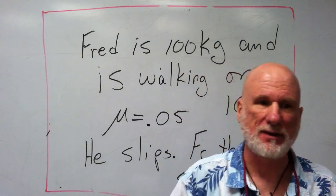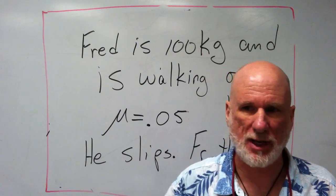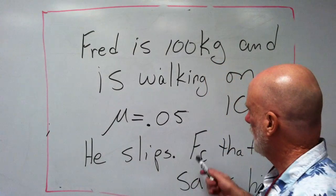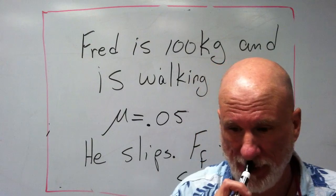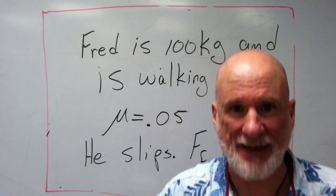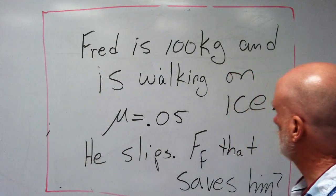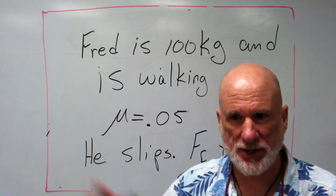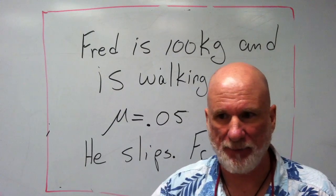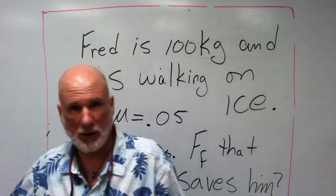0.05. Anything less than 0.1 is going to be ice, snow, slippery, that sort of thing. Now he slips on the ice, but he saves himself. There is some friction there. There's some force of friction that's going to save him. What force of friction is actually going to save him?